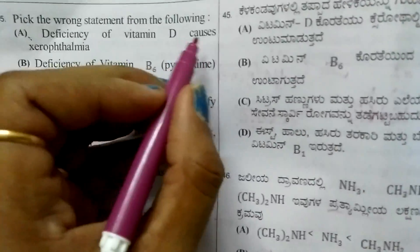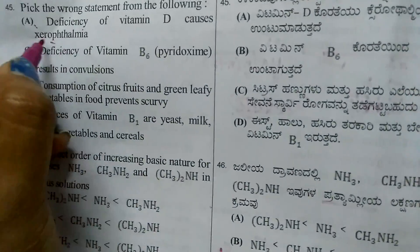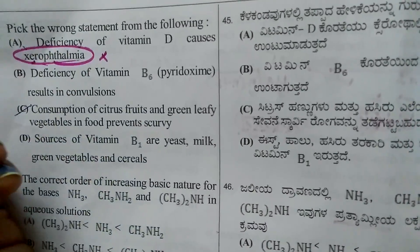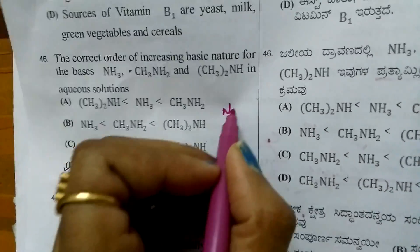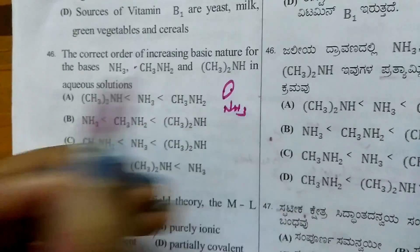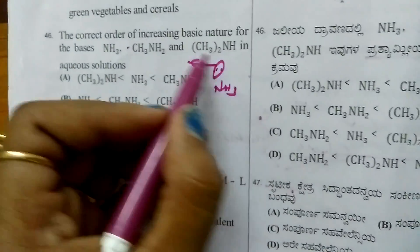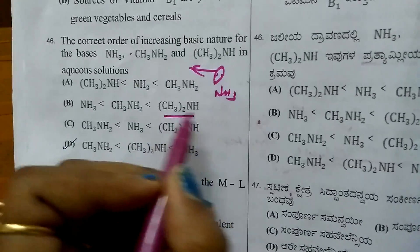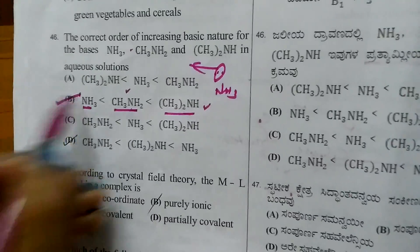Question 44: Pick wrong statement. Deficiency of vitamin D causes rickets, but they gave xerophthalmia, which is due to vitamin A deficiency, so wrong statement. Question 45: Increasing basic strength order. Ammonia has lone pair showing basicity. Two alkyl groups make secondary amines most basic, then primary, then ammonia.